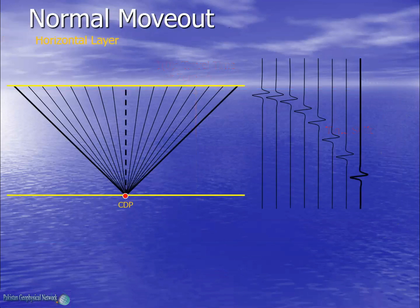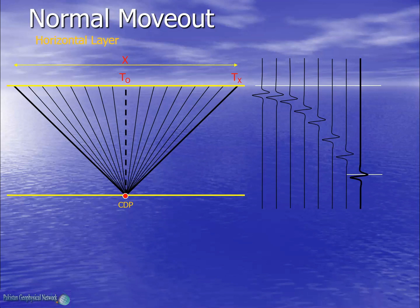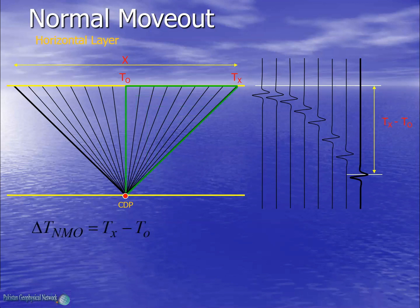Now let's consider reflected ray paths from a horizontal layer and their time gathers. X is the offset, Tx is the slant two-way time, and T0 is the vertical two-way time at zero offset. We have to shift all these events to zero offset. Thus NMO correction is simply the difference between Tx and T0. If we consider one side of the ray paths, we have a right-angled triangle.